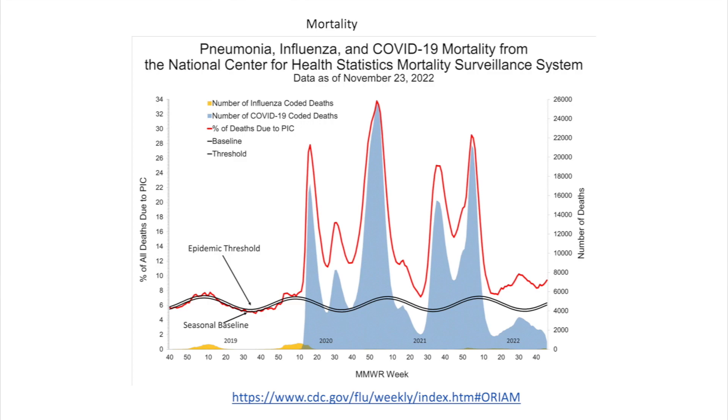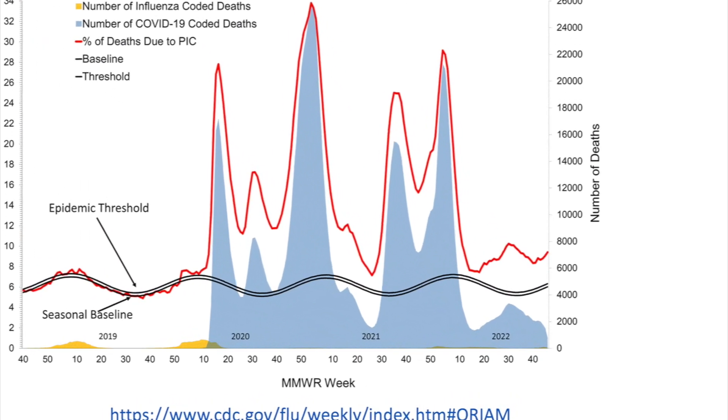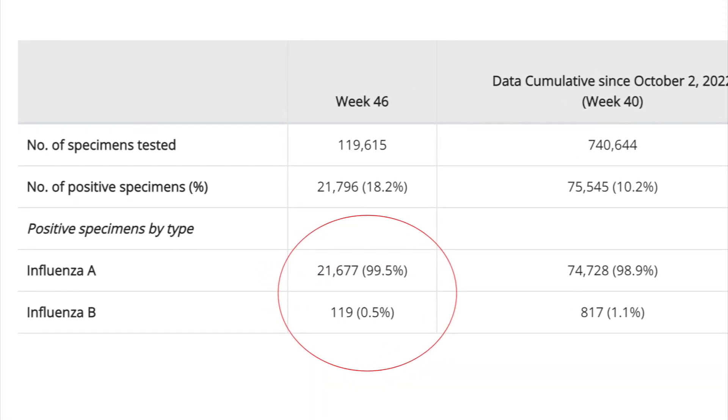This CDC graph shows all deaths due to pneumonia, influenza, or COVID-19 — it does not break out RSV separately. The blue line represents COVID mortality, which tracked most deaths during the pandemic. Right now in 2022, COVID deaths are very low but the red line remains high — that's mostly RSV, which we talked about before. We can expect this graph to start going up based on influenza deaths as the season progresses.